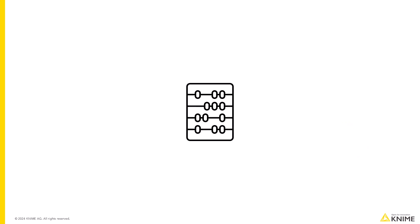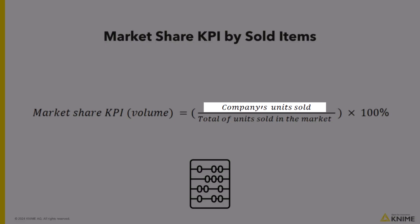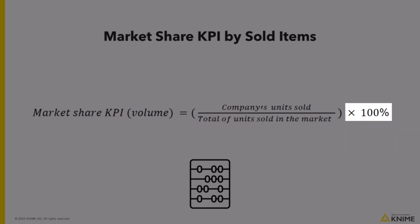First, let's look at calculating the market share KPI by volume. You divide the number of units your company sold by the total number of units sold in the overall market, and multiply by 100 to get a percentage.